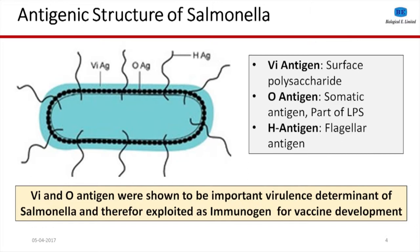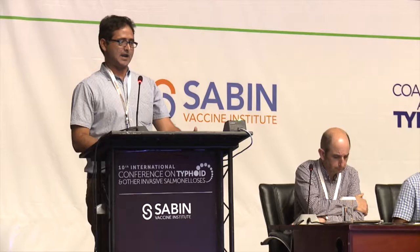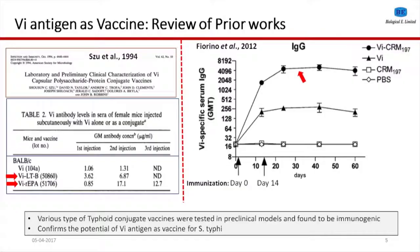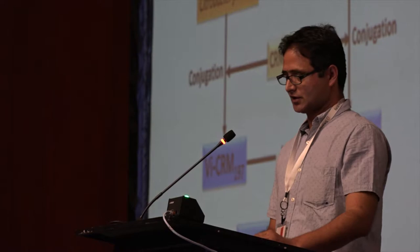This is a quick review of what proof of concept has been established in the past. In the left panel, there is a pioneer study showing that VI is an important immunogen for Salmonella typhi — a VI-EPA conjugate was used to immunize mice and found to be immunogenic. There is also a publication showing that a VI-CRM conjugate used for mucosal immunization in mice was immunogenic, confirming the role of VI as a vaccine antigen. On the O2 side, another publication demonstrated that O2 is an important antigen and is immunogenic in mice. These were taken as proof of concept.